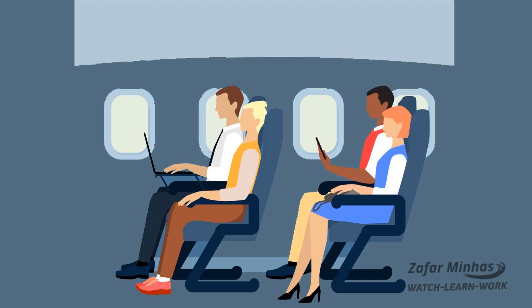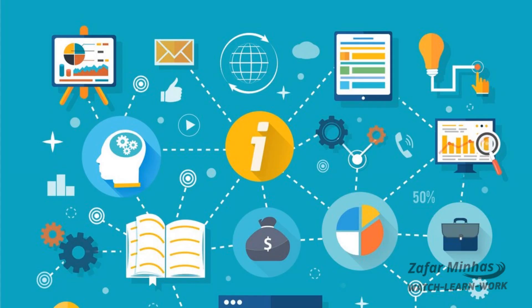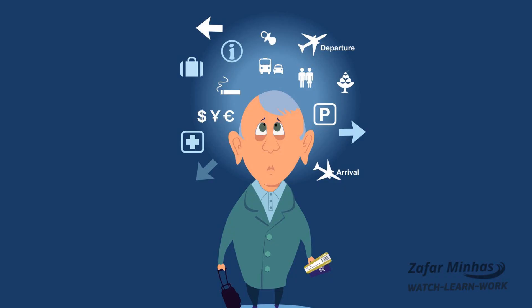If you have multiple passengers in your PNR, you might want to add information that only concerns one of the passengers rather than all of them. This means that any extra request or information entered in a PNR can be easily attributed to the correct person. This is called passenger association.